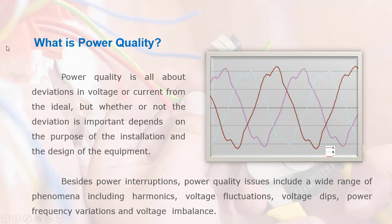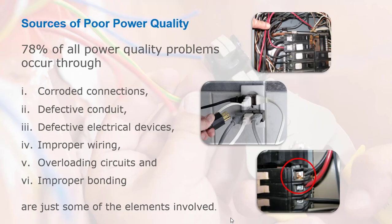Now let's look at power quality. Power quality is about deviations in voltage or current from the ideal. Whether or not a deviation is important depends on the purpose of the installation and the design of the equipment. Besides power interruptions, power quality issues include harmonics, voltage fluctuations, voltage dips, power frequency variations, and voltage imbalance. Sources of poor power quality: 78% of all power quality problems occur through corroded connections, defective conduit, defective electrical devices, improper wiring, overloaded circuits, and improper bonding.